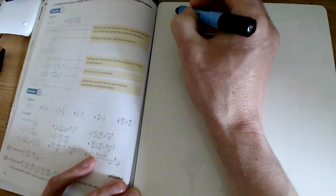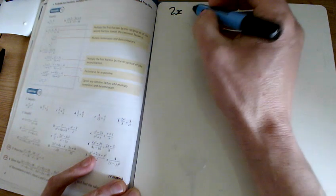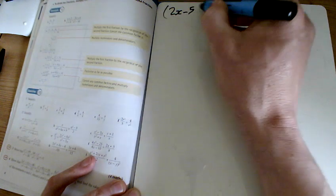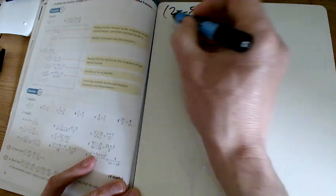For f we've got some factorising to do again. 4x squared take away 25, that could be factorised, it's the difference of two squares again. I've got 2x minus 5 and 2x plus 5 for the first bit.